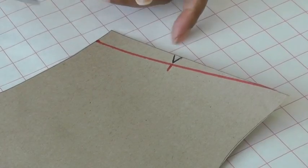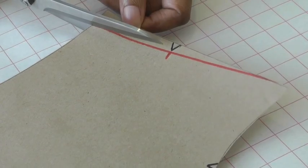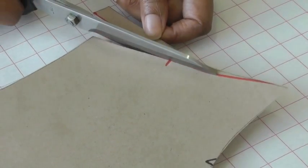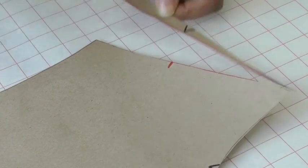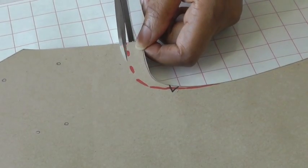And the next thing is to cut along the lines you've done. The first one's going to be the shoulder and now for the armhole.